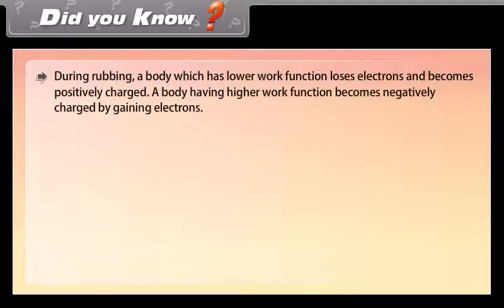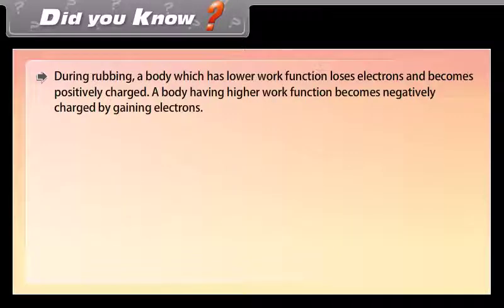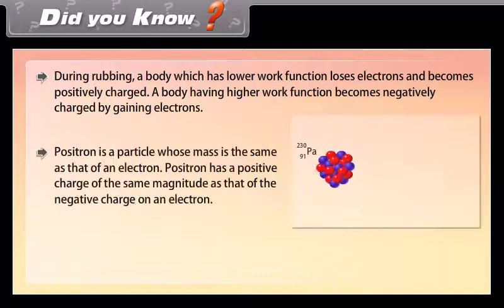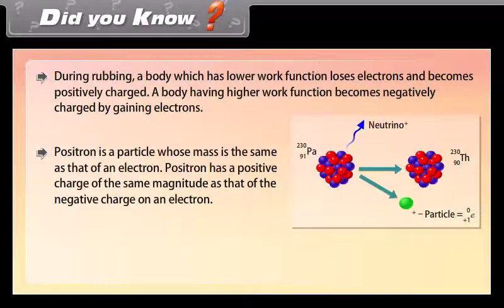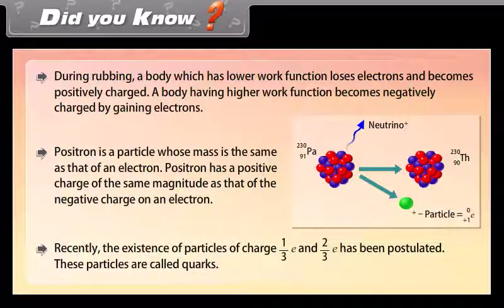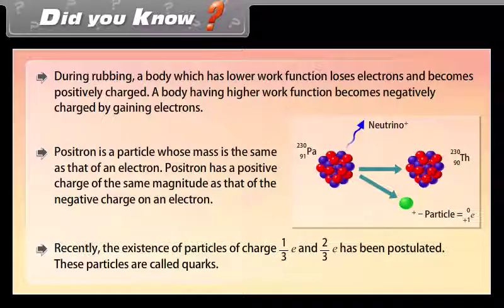Did you know: During rubbing, a body with a lower work function loses electrons and becomes positively charged, while a body with a higher work function gains electrons and becomes negatively charged. A positron has the same mass as an electron but carries a positive charge of equal magnitude. Recently, the existence of particles with charges of 1/3 e and 2/3 e has been postulated — these particles are called quarks.